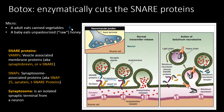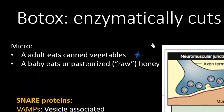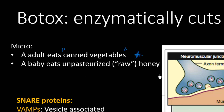The boards might test this with the drug Botox, or they might say an adult eats canned vegetables — that should be a tip-off for Clostridium botulinum, the anaerobic bacterium which creates this toxin. The other susceptible individual is a baby that eats unpasteurized or raw honey.